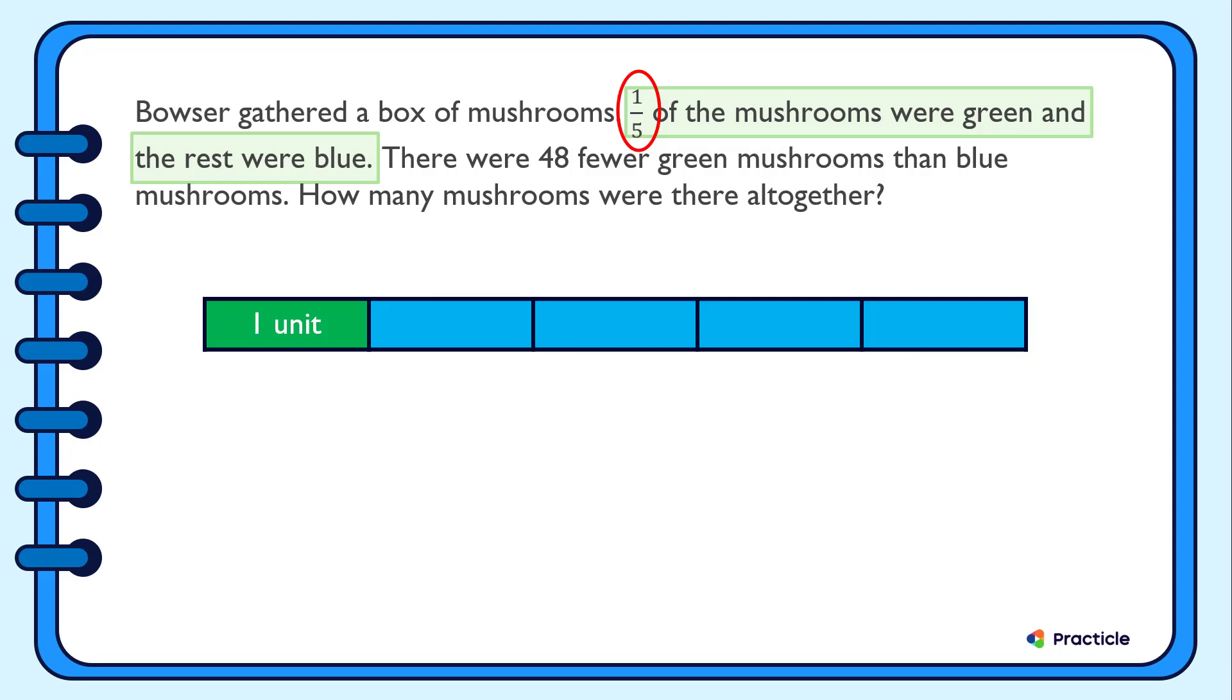Now let's read on to see what else we are given. There were 48 fewer green mushrooms than blue mushrooms.